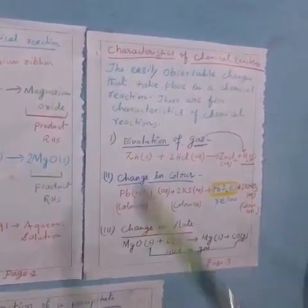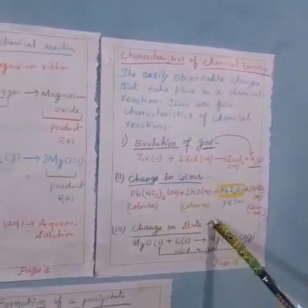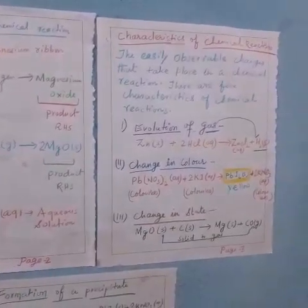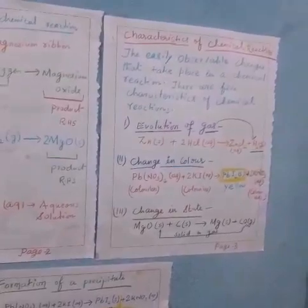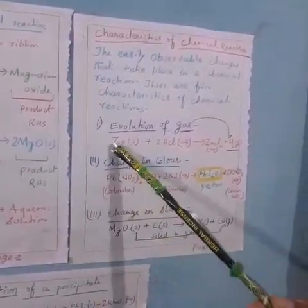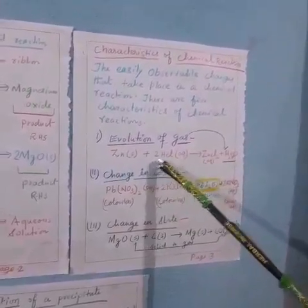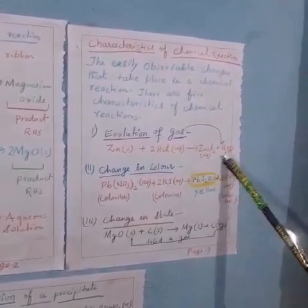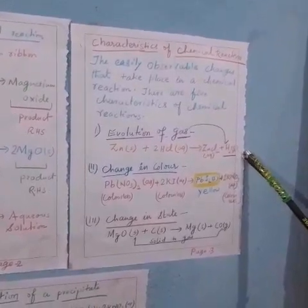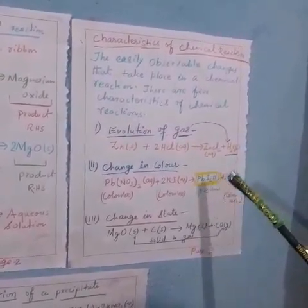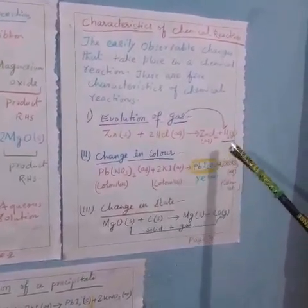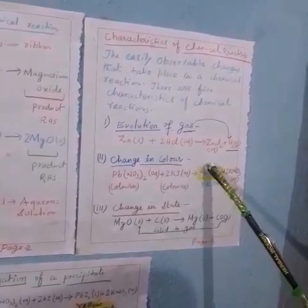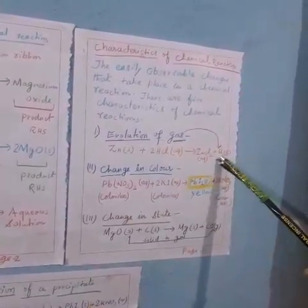They are as follows, evolution of gas, changes in color, change in state, change in temperature, and formation of precipitate. The first one is evolution of gas. In the lab, you have already seen that when zinc metal is added to the aqueous solution of hydrochloric acid, then hydrogen gas is formed. And you have enjoyed also, how can we identify the hydrogen gas? Yes, everyone can be identified by when burning matchstick is brought near them, then popping sound is produced. Did you enjoy it in the earlier classes? So this is evolution of gas.